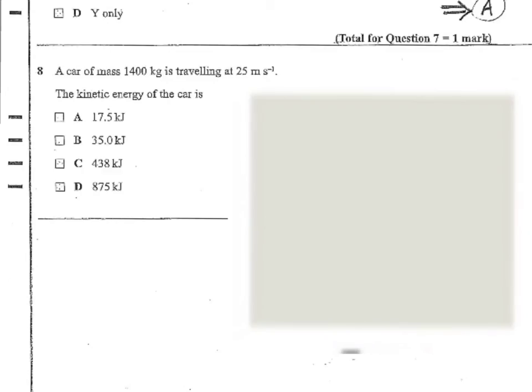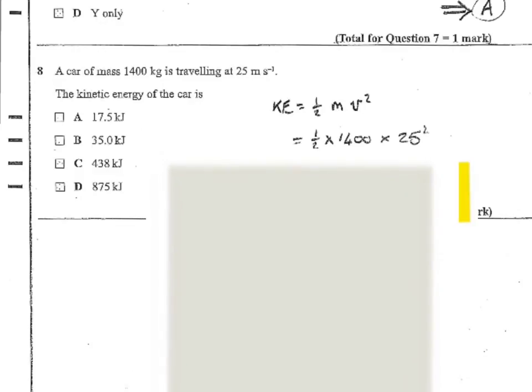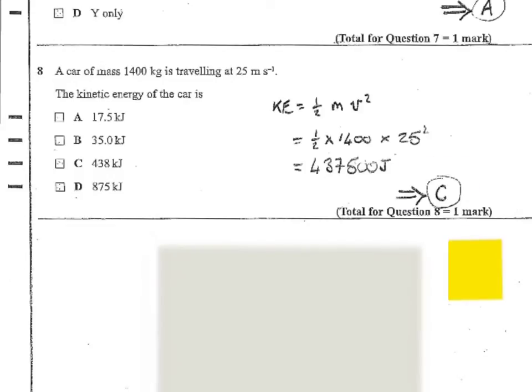Question 8. A car of mass 1400 kilograms is travelling at 25 meters per second. Kinetic energy of the car is one of these figures. Well, we have an expression for kinetic energy. It's a half times the mass times the velocity squared. And if we put in some numbers, it's a half times 1400 times 25 squared. And when we do that, we get 437,500 joules, which would be 438 approximately kilojoules, which is answer C.